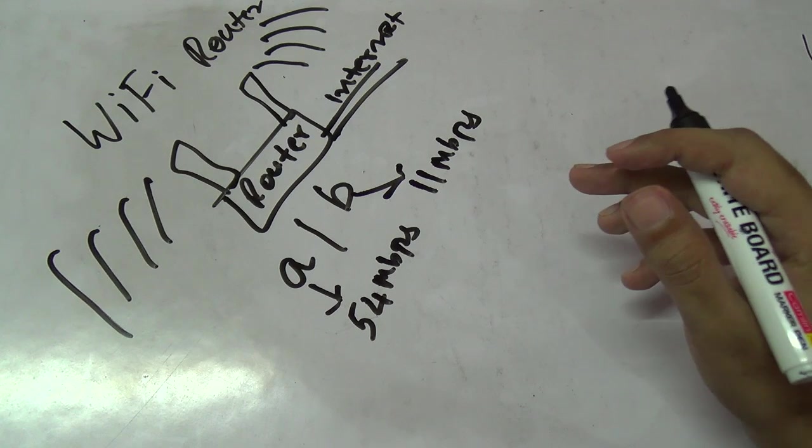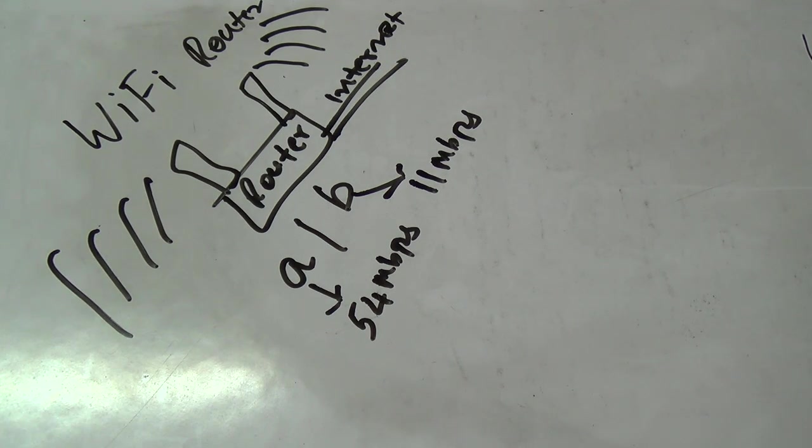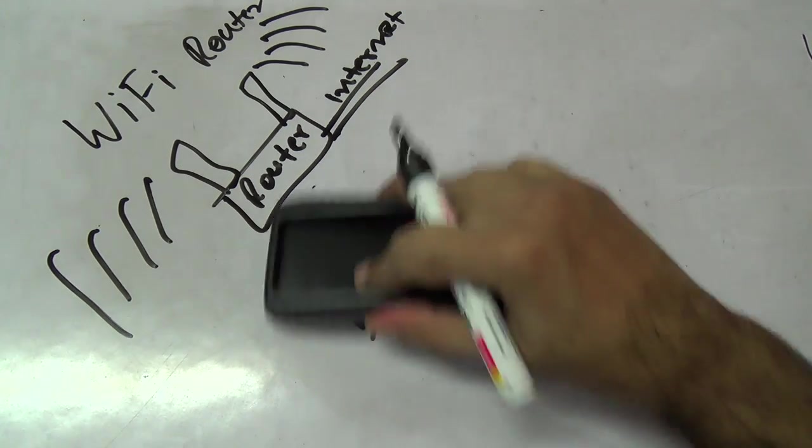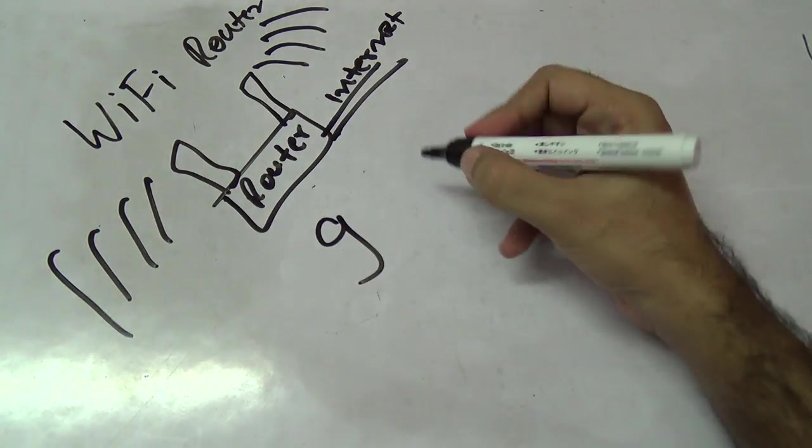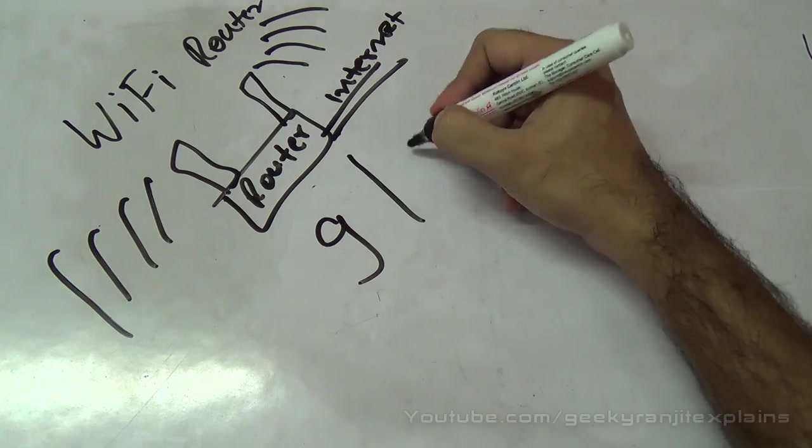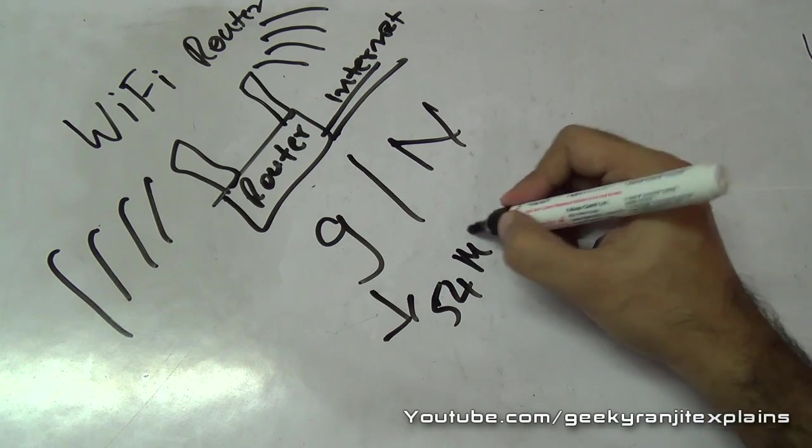The a standard had a theoretical speed of 54 Mbps and the b standard had 11 Mbps. The problem with a was that the range was not that great, so it quickly faded. After b, the g standard evolved, and these days the n is pretty common.